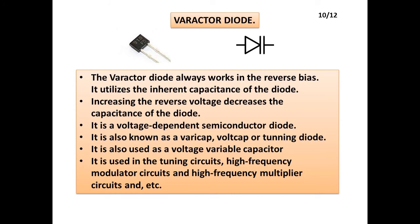Varactor Diode: The varactor diode always works in reverse bias and utilizes the inherent capacitance of the diode. Increasing the reverse voltage decreases the capacitance. It is a voltage-dependent semiconductor diode, also known as a varicap, volt-cap, or tuning diode, and is used as a voltage variable capacitor. It is used in tuning circuits, high-frequency modulator circuits, high-frequency multiplier circuits, and more.